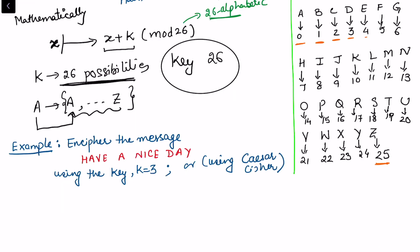Let's take an example. I want to cipher the message 'have a nice day' using key k = 3. We may also call this the Caesar cipher, which is the oldest classical cryptography technique. The key length is fixed at 3, meaning we shift each letter by 3 positions. In general, k can be any value from 1 to 25.